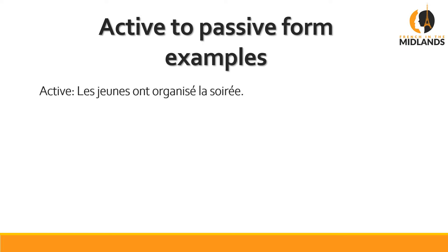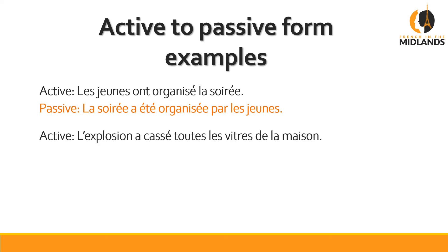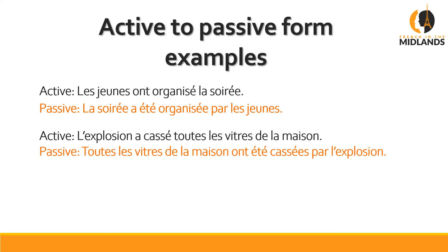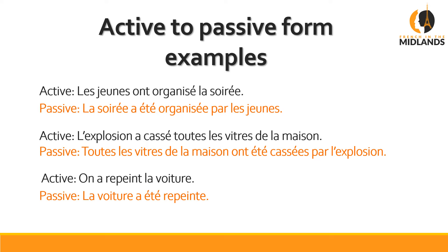Let's have a look at some more examples. Active form: 'Les jeunes ont organisé la soirée' — the youngsters have organised the party. Passive form: 'La soirée a été organisée par les jeunes' — the party was organised by the youngsters. Active form: 'L'explosion a cassé toutes les vitres de la maison.' Passive form: 'Toutes les vitres de la maison ont été cassées par l'explosion.' Active: 'On a repeint la voiture.' Passive: 'La voiture a été repeinte.'